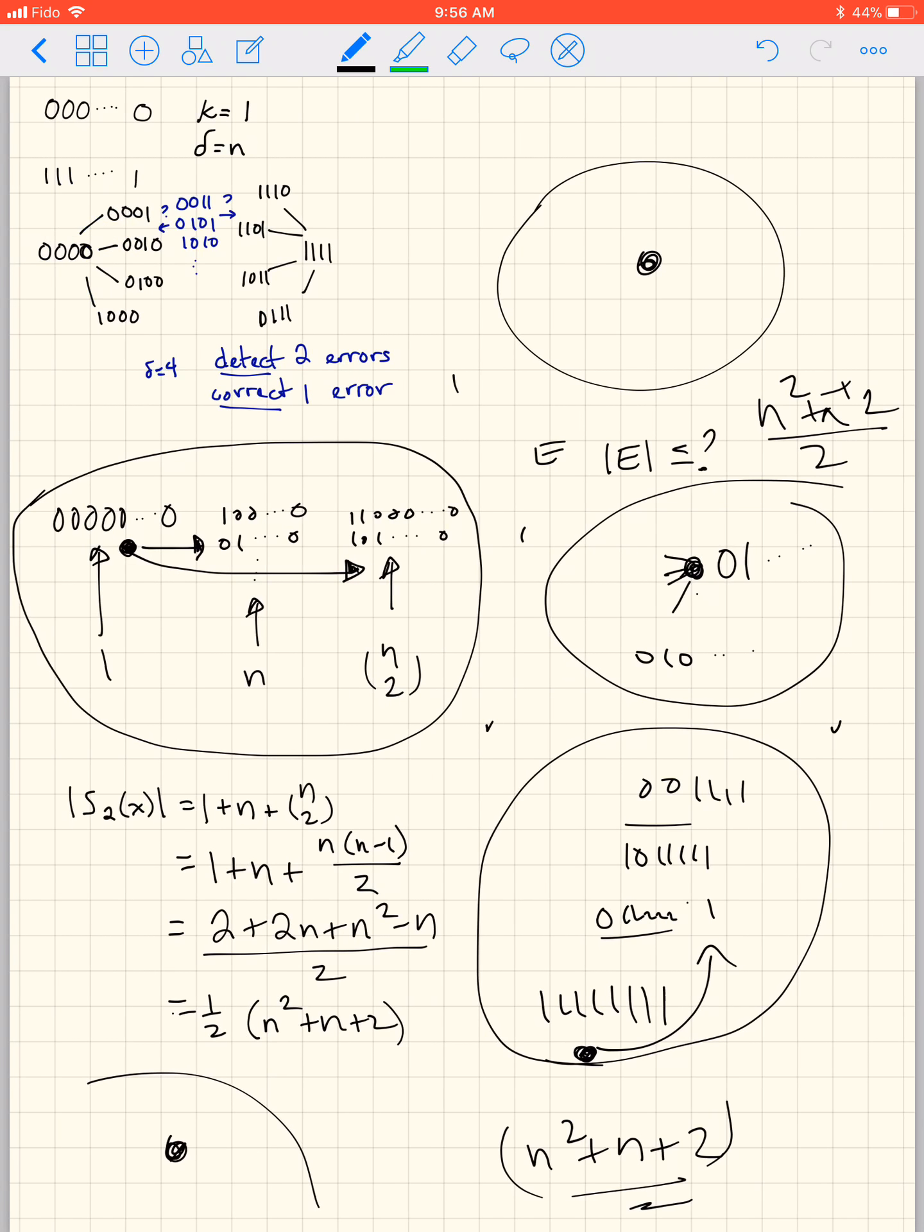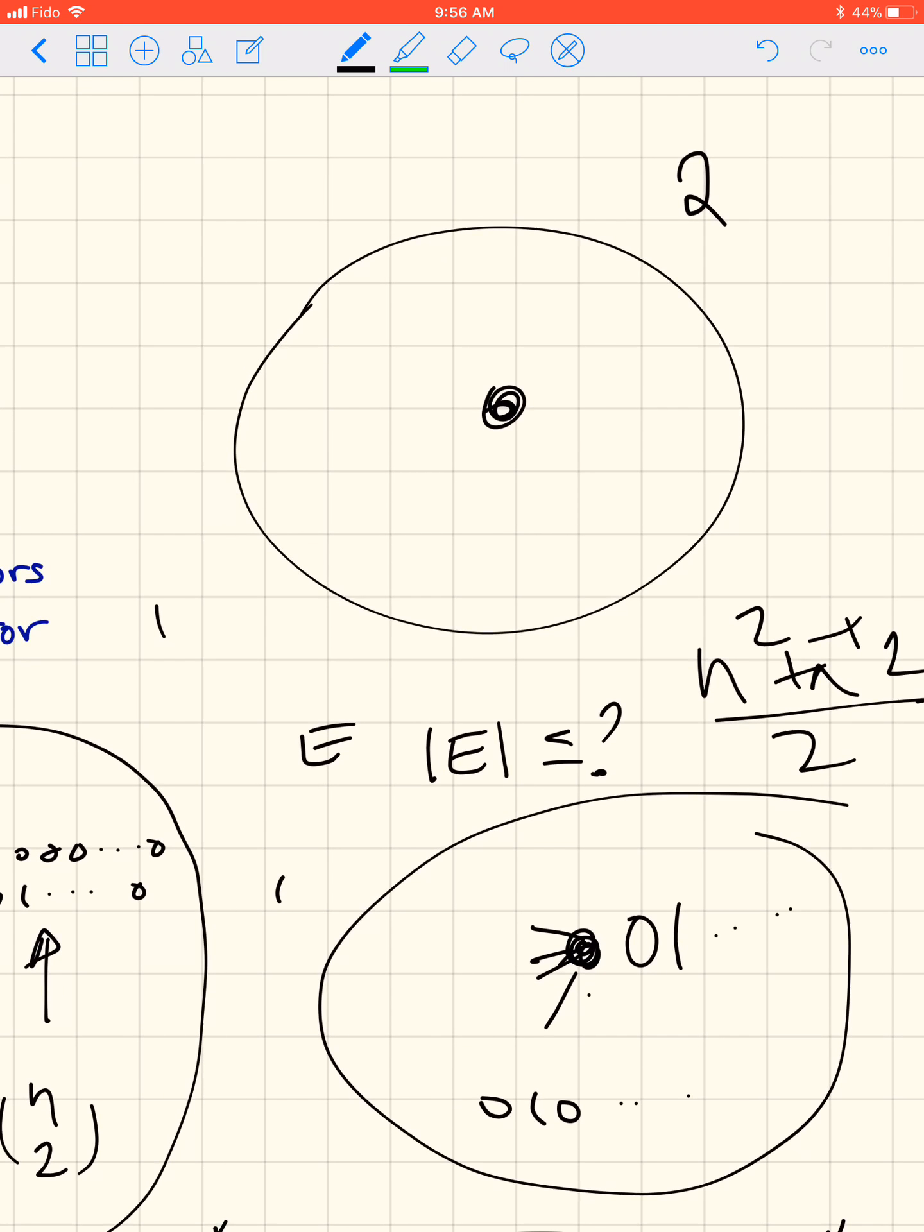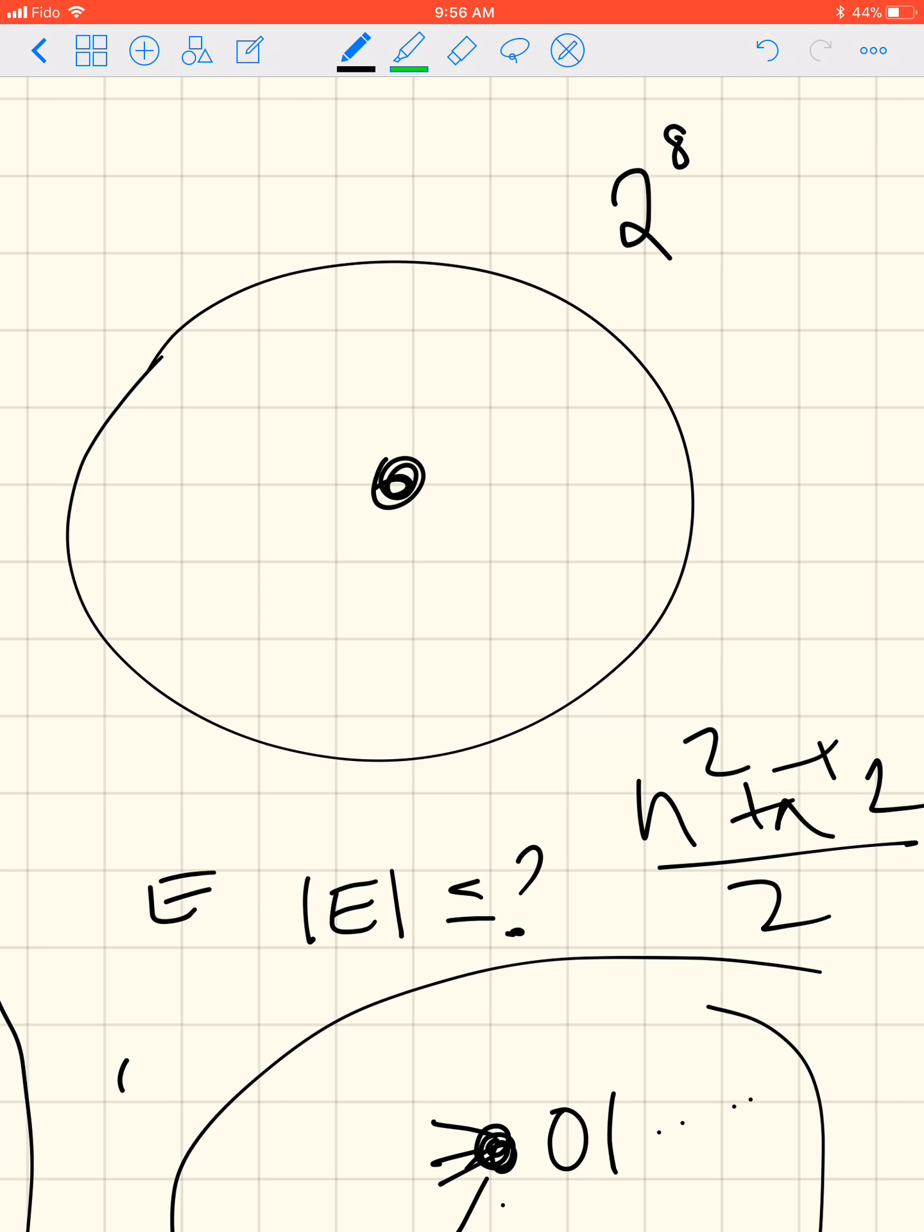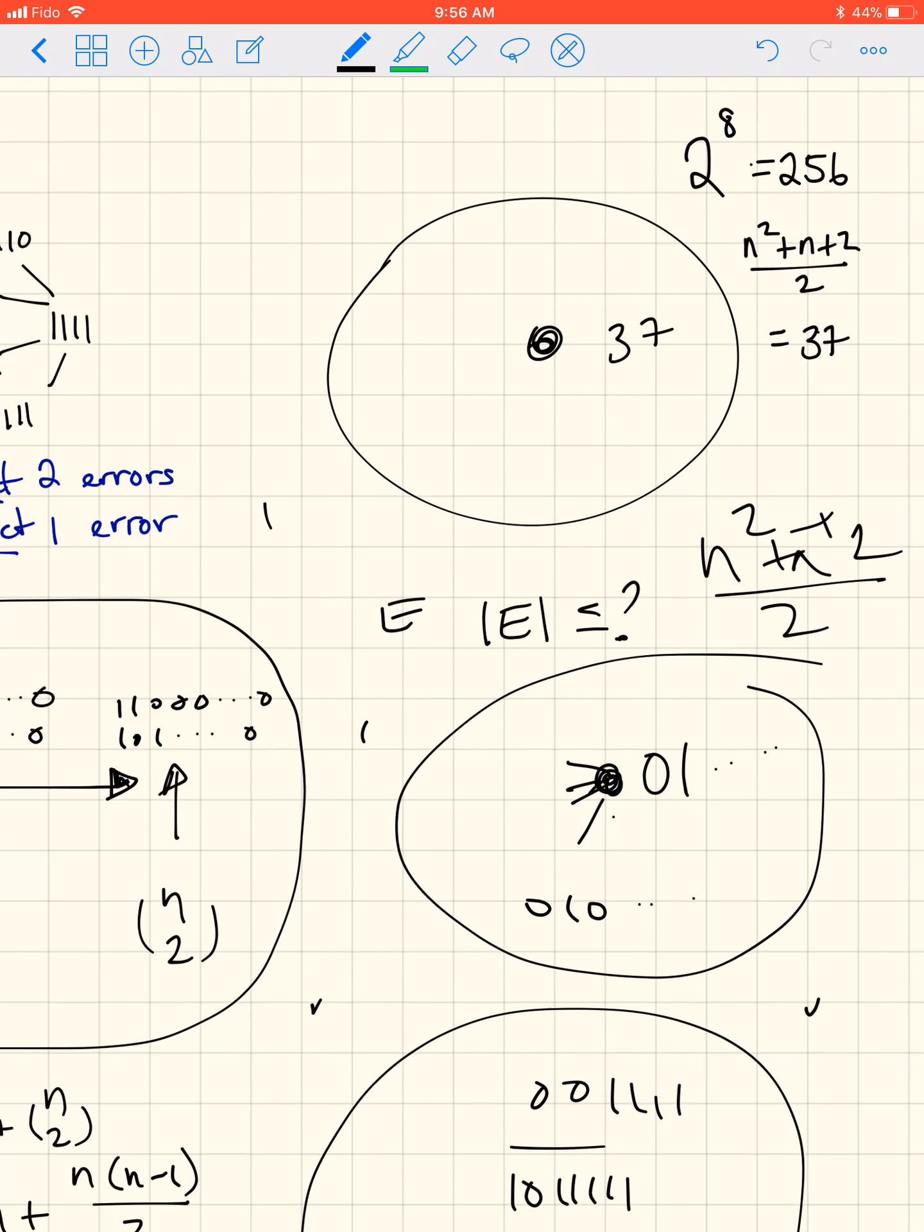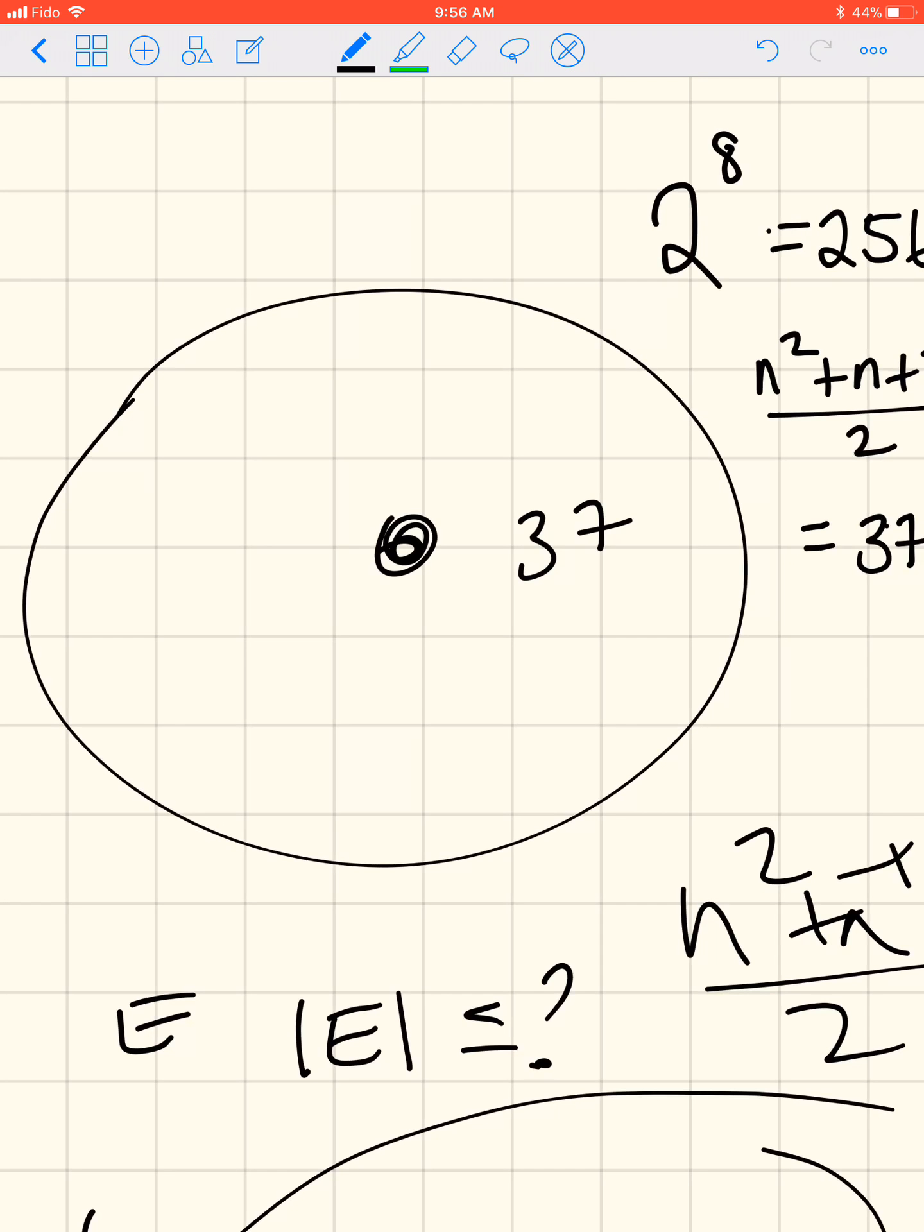We've got how many possible words? 2 to the 8, because we had 8 bits, which can be either 0 or 1. These are always binary codes at your level. We have 2 to the 8, which is 256 possible words and we know that each of these spheres has, well, we haven't actually figured it out. n squared plus n plus 2 over 2, when n equals 8, that's 64, it's 37 I hope. Something like that.